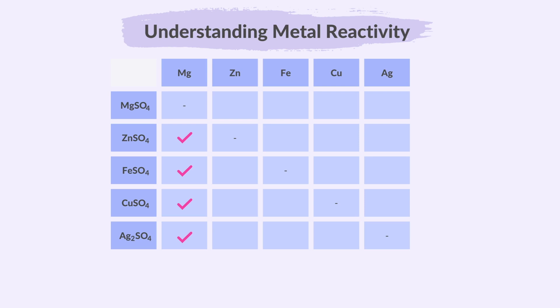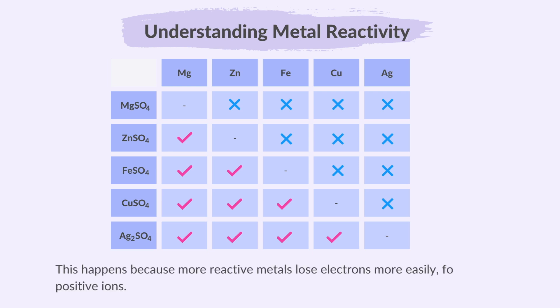Magnesium reacts with aqueous ions of zinc, iron, copper and silver to displace them from their compounds. Zinc reacts with aqueous ions of iron, copper and silver, but not with magnesium ions. Iron reacts with the aqueous ions of copper and silver, but not with zinc or magnesium ions. Silver does not react with the aqueous ions of magnesium, zinc, iron or copper. From this table, we can understand that magnesium is the most reactive metal among these, followed by zinc, iron, copper and finally silver, which is the least reactive. This happens because more reactive metals lose electrons more easily, forming positive ions.